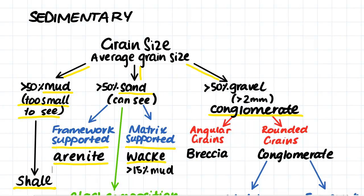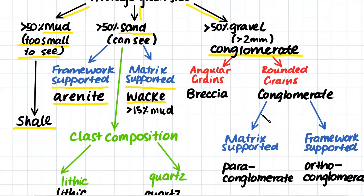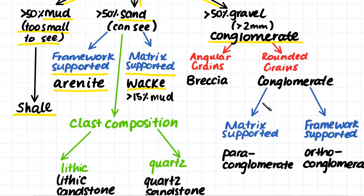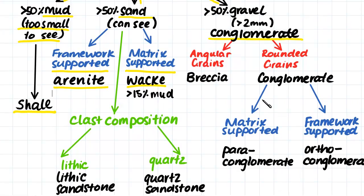So the next thing we look at when we're considering sandstone is to look at the clast composition. A lithic sandstone is a sandstone which is made up of mainly lithic particles. Lithic means that the particles can be any sort of weathered rock, whether that be igneous, metamorphic or sedimentary.